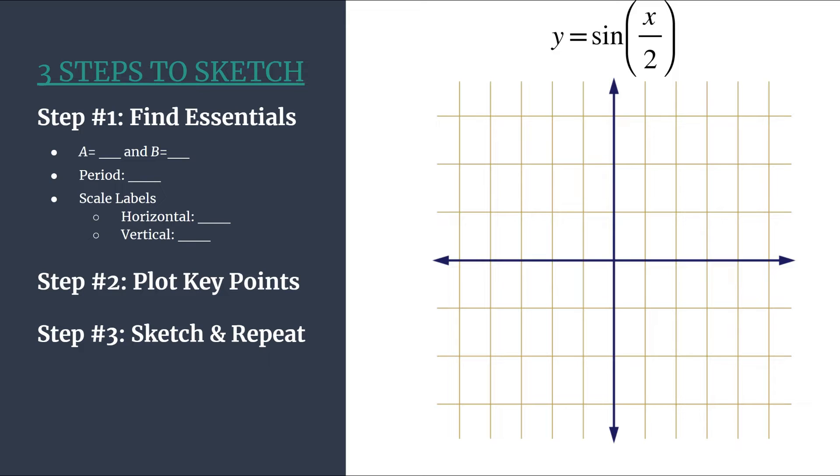This equation is in the form y equals a sine bx, but you can see the b is a little bit disguised here, so if we rewrite this equation as y equals sine of 1 half x, it's much more clear that b equals 1 half.